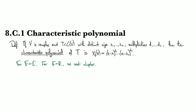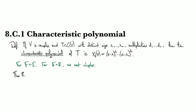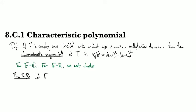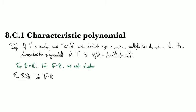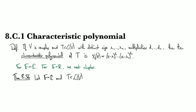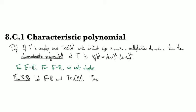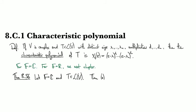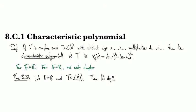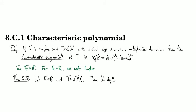So our first result on the characteristic polynomial is theorem 8.36, which says that if we have a complex vector space and a linear operator on it, then we have two fairly straightforward results. First off, the degree of the characteristic polynomial, that's chi for characteristic, it's the Greek version of ch.